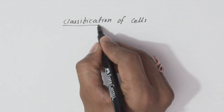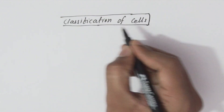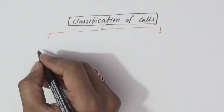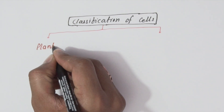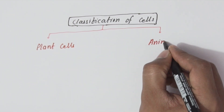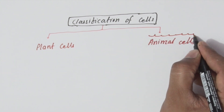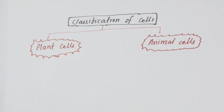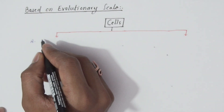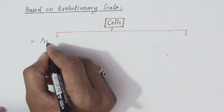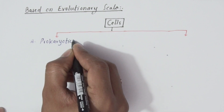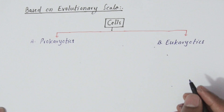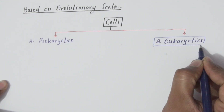Cells can be classified based on various platforms. Basically, cells are of two types: plant cells and animal cells. We are not going to discuss much about plant cells. Based on evolution, cells can be classified into two groups: prokaryotic cells, or prokaryotes, and eukaryotic cells.